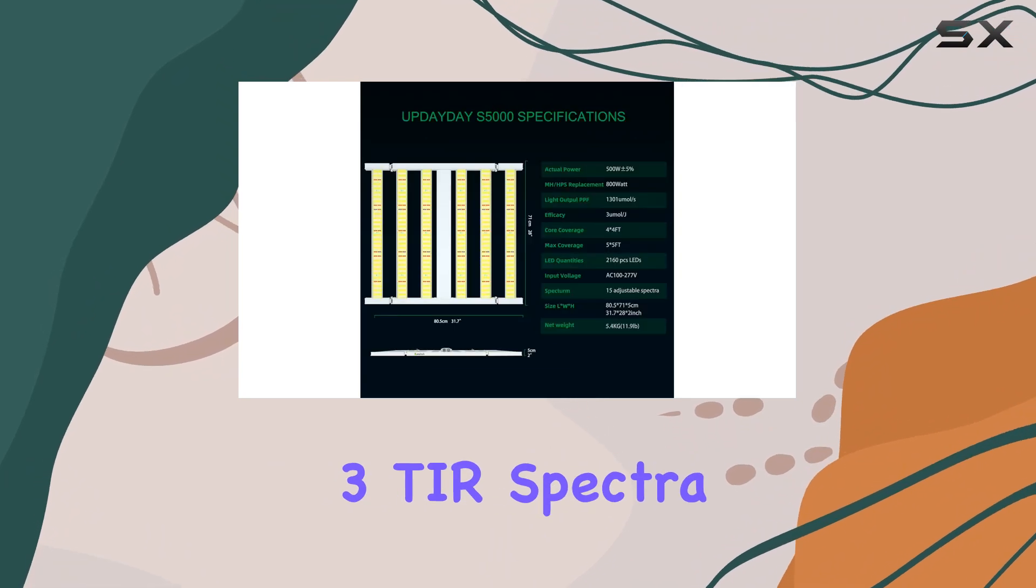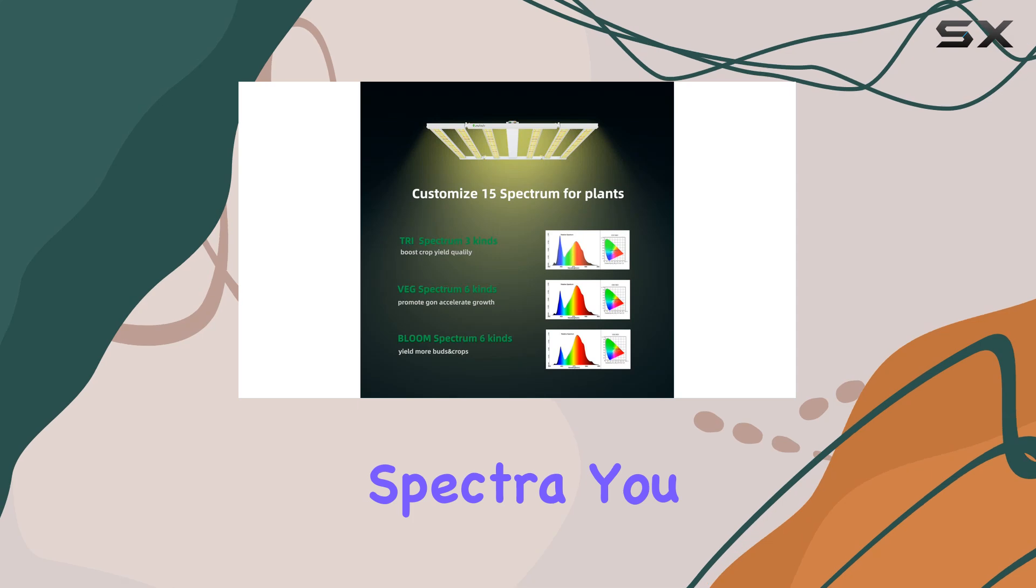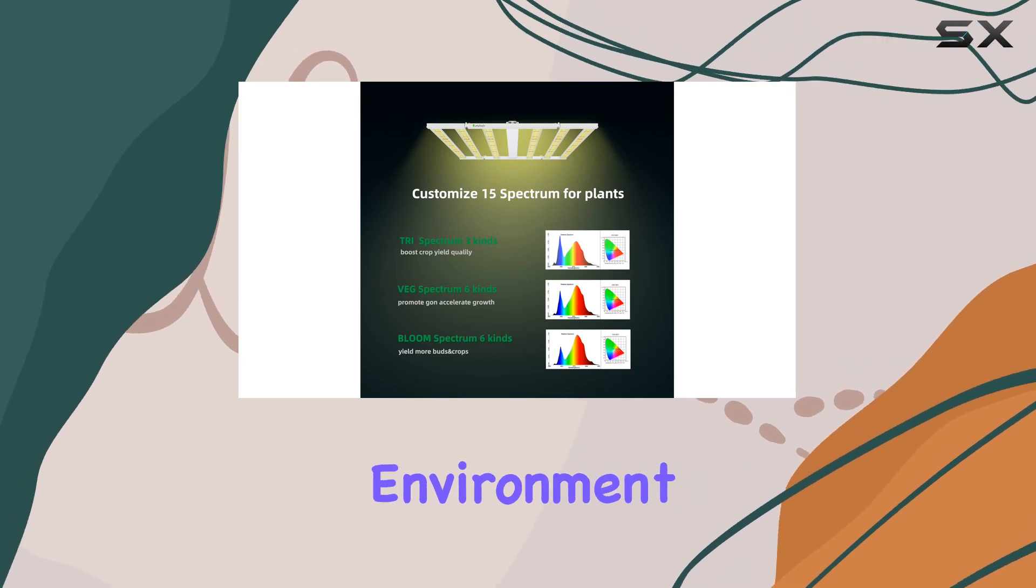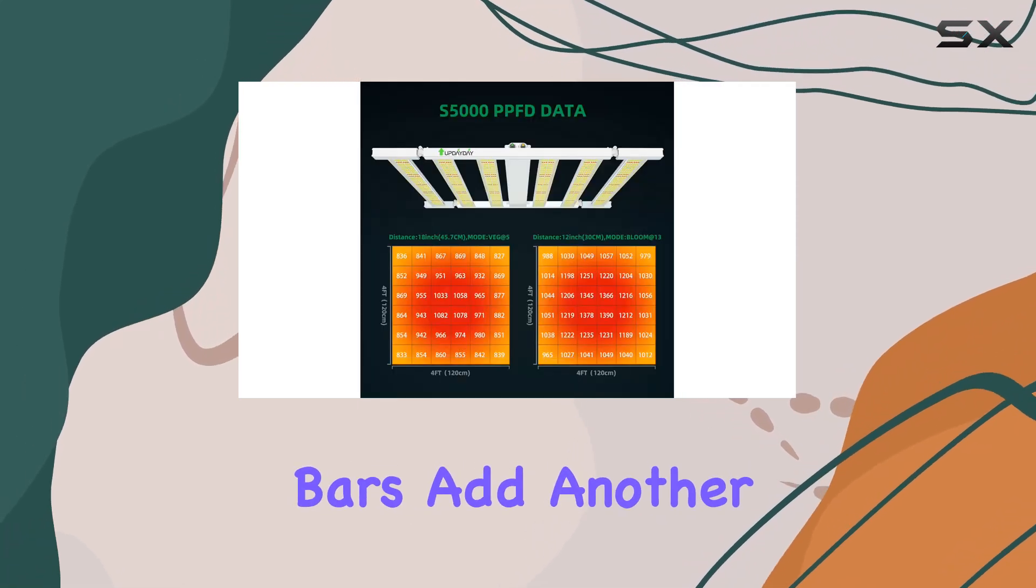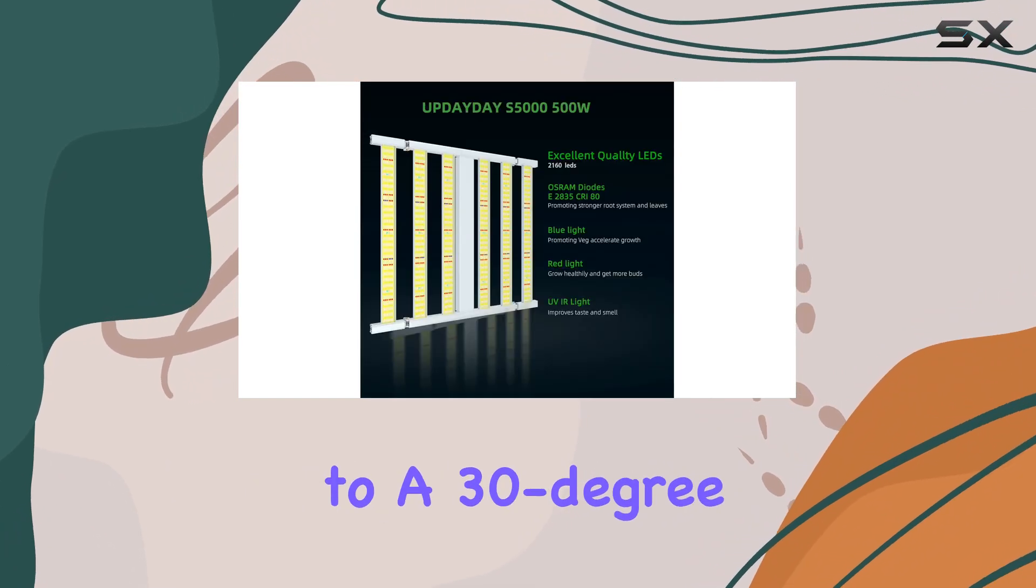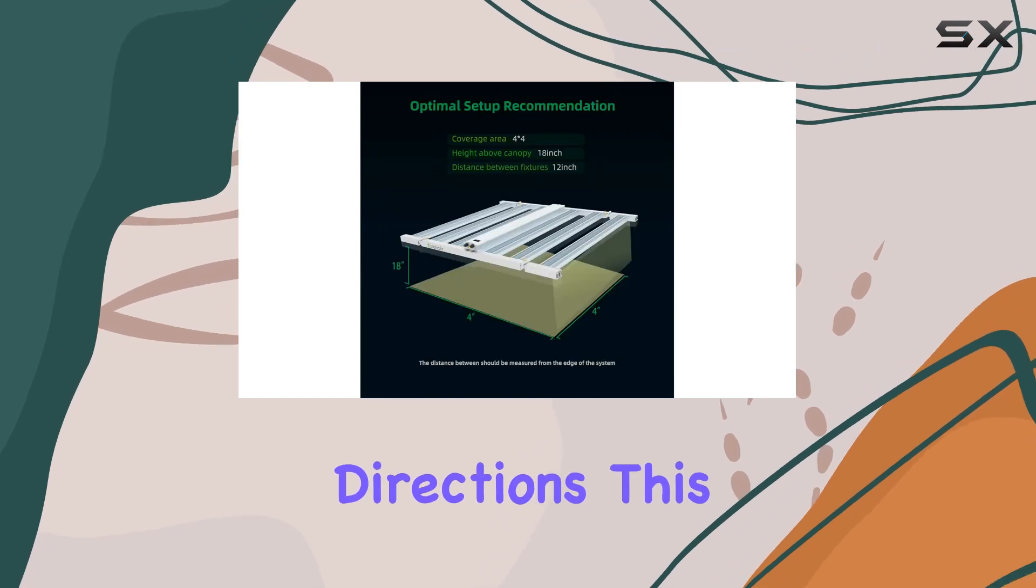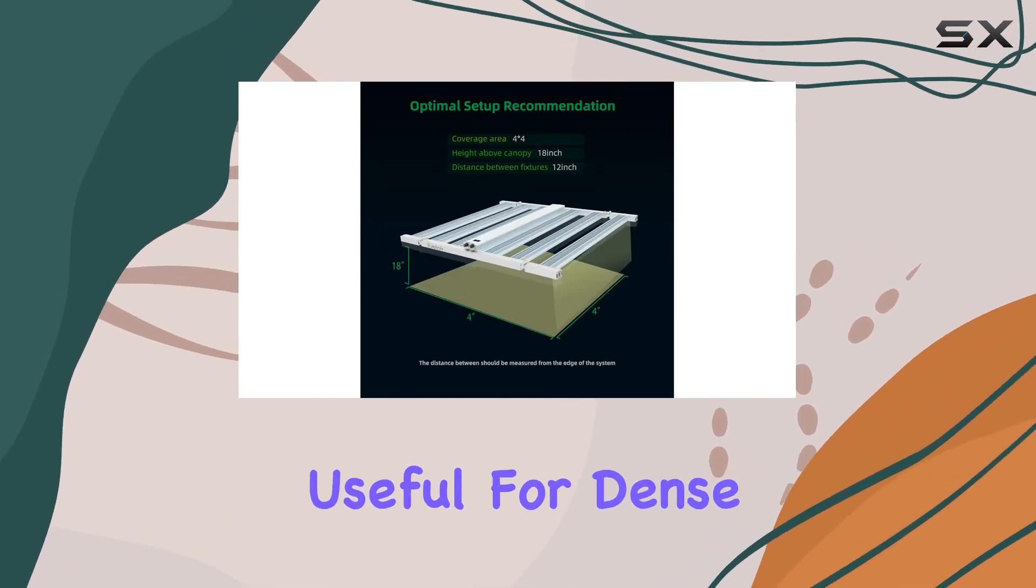With three tier spectra, six VG spectra, and six bloom spectra, you have total control over the light environment. The side light bars add another layer of customization, as they can be adjusted up and down to a 30-degree angle, ensuring your plants receive light from multiple directions. This is particularly useful for dense or layered plant setups.